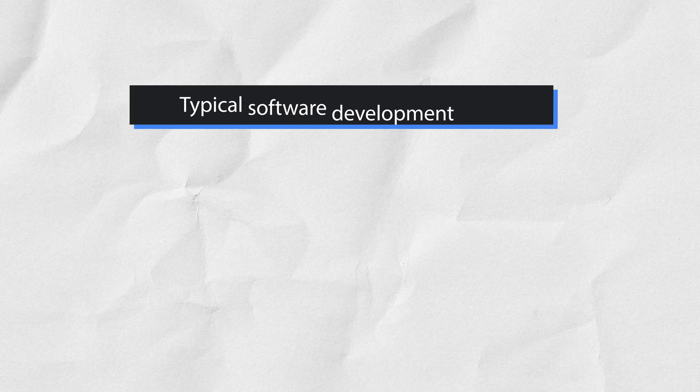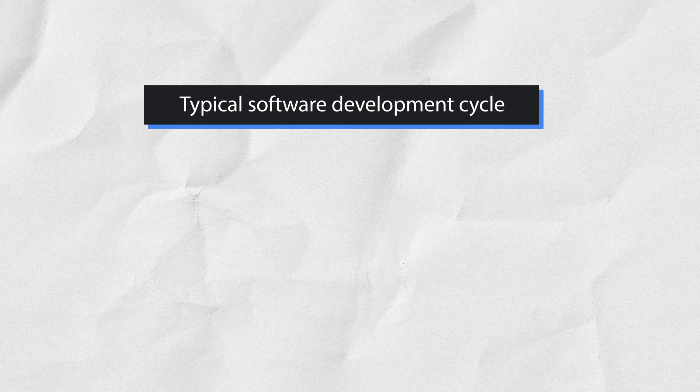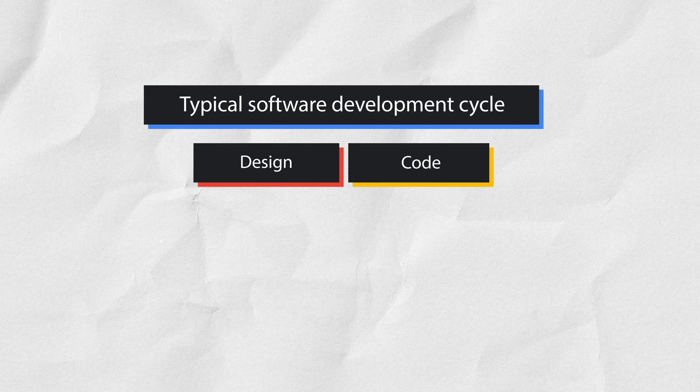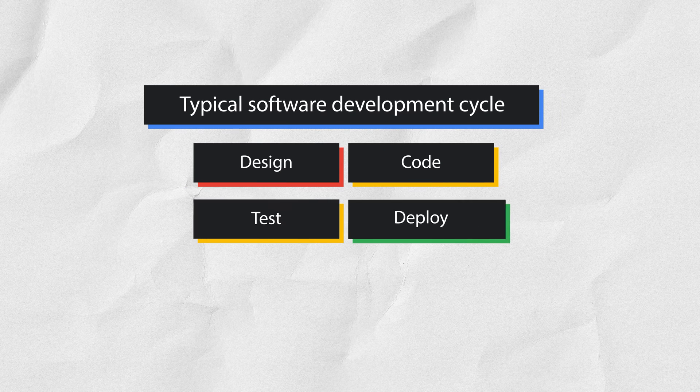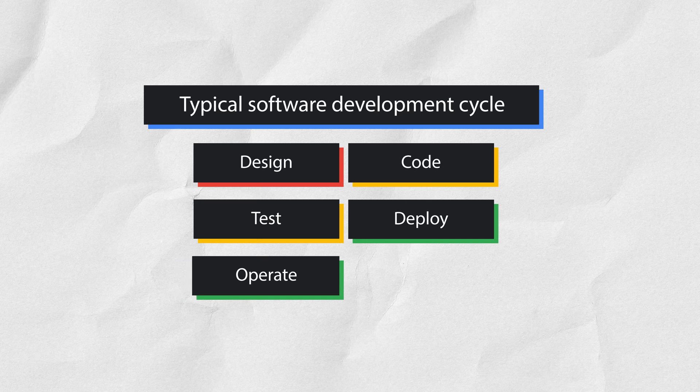The order we'll follow is that of a typical software development cycle: design, code, test, deploy, operate, and end with analyze.